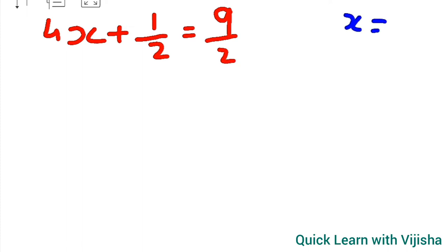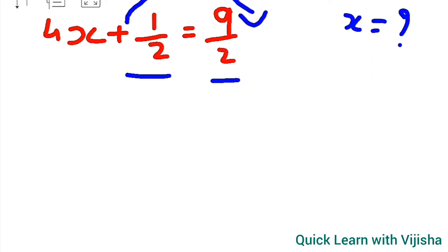Equation in one variable means you have to find the value for x. X is the only variable in the question. We will be using the opposites of the numbers. Since fraction numbers are there, we will take plus 1 upon 2 to the right side, so it will become minus 1 upon 2.